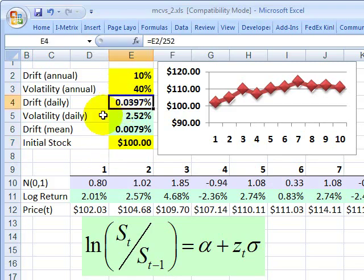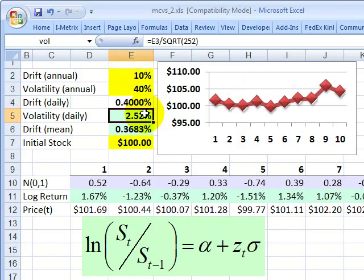First, I convert the annual drift to a daily drift. And to do that, I simply divide the annual drift by 252. I'm assuming that there's 252 trading days in a year. So, you can see I just converted the annual drift into a daily drift.